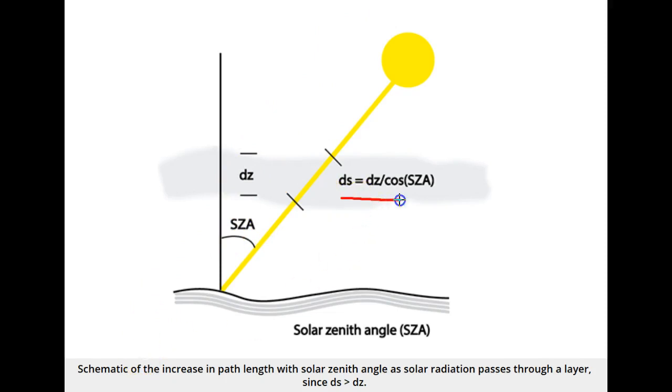And because the decrease in radiation is exponential with path length, we should expect the amount of radiation absorbed at high solar zenith angles to be great compared to the case of the overhead Sun.